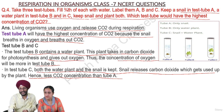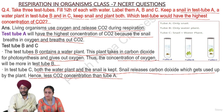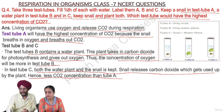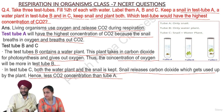Test tube B contains only a water plant. The water plant takes in carbon dioxide and gives out oxygen, so the concentration of oxygen is higher in test tube B. In test tube C, there is both the snail and the water plant, and the CO2 released by the snail is used up by the plant.